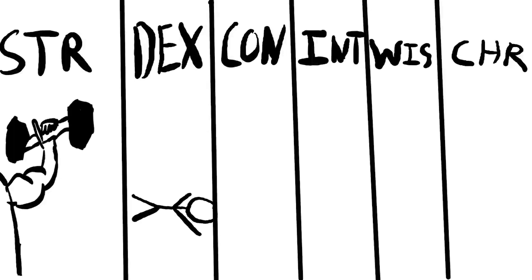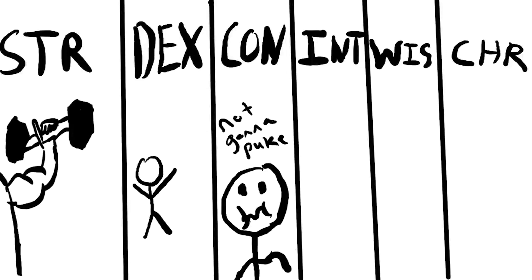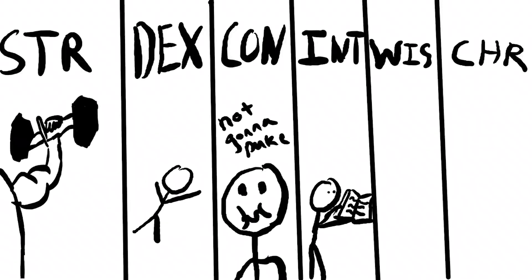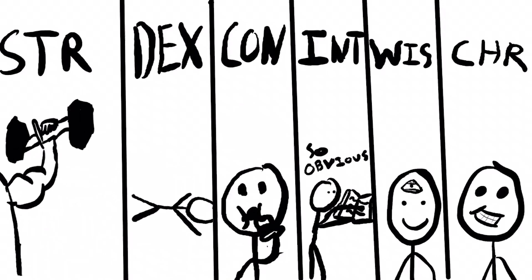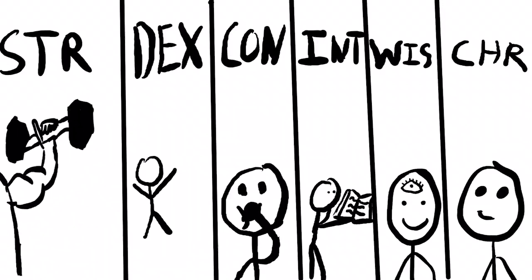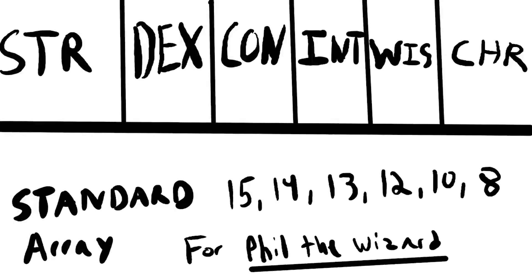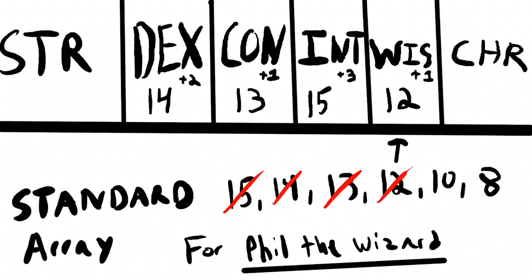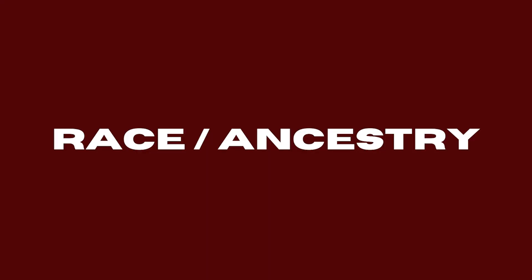Ability scores. A big part of your character sheet is your ability scores — these are essentially the DNA of your character and help dictate things they are naturally good at and not so good at. There are six: Strength (how strong you are), Dexterity (how agile you are), Constitution (how much fortitude or endurance you have), Intelligence (how smart you are), Wisdom (how perceptive and insightful you are), and Charisma (how much force of personality you have). Depending on the system and game master, you either roll for these numbers or choose from a predetermined set called the standard array.